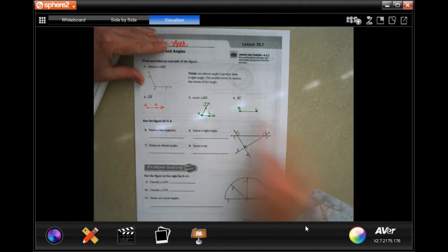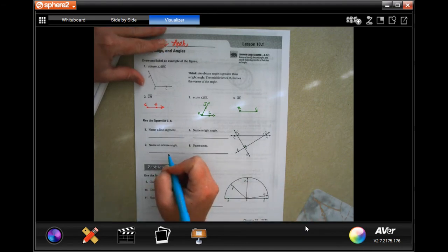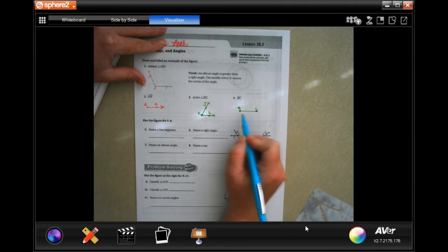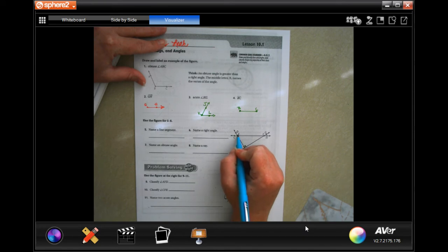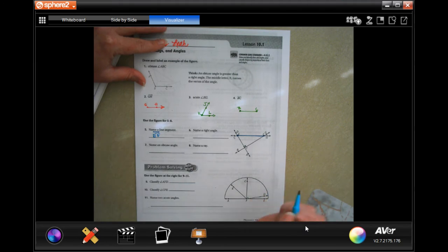Now we're going to use this diagram and name a line segment first. A line segment goes directly between two points, like B and C. So I'm going to go with E and F, with a line over both of them, no arrow.